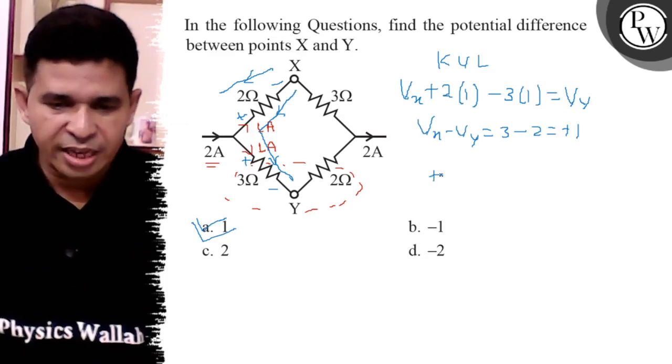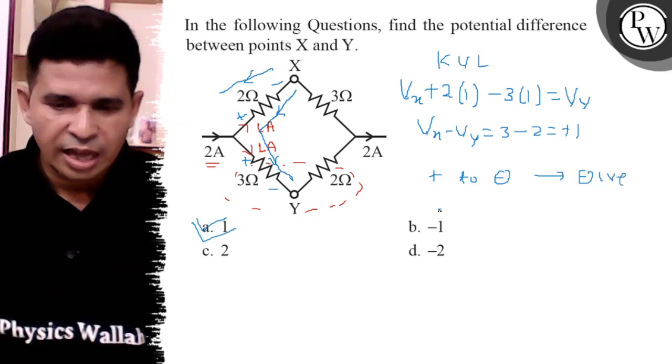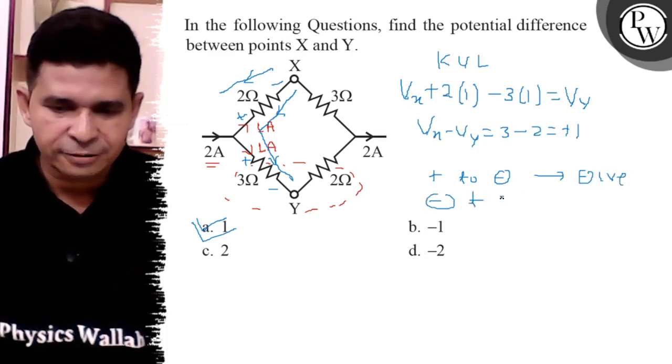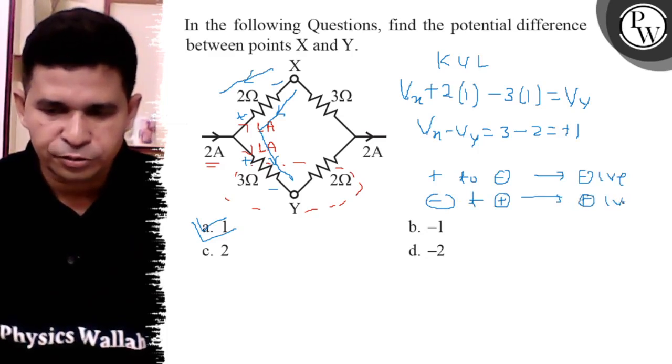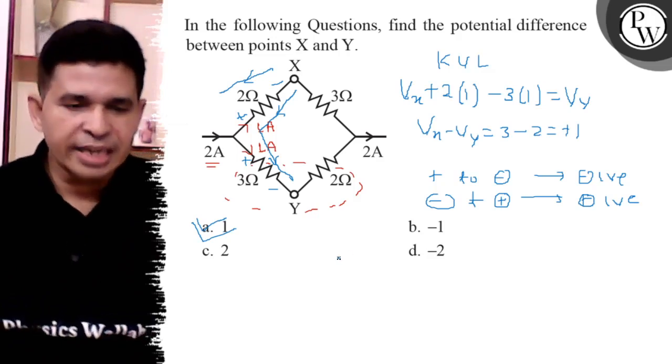Remember this: plus to minus is considered negative, and minus to plus is considered positive in the algebraic sum of voltages in KVL.